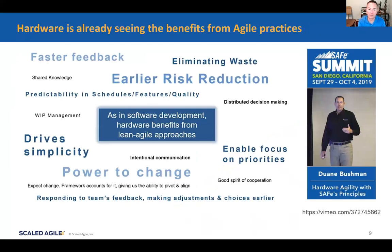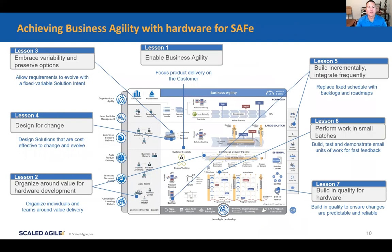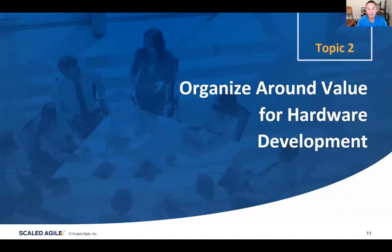Hardware is already seeing the benefits. There's a great video from our summit with one of our lead consultants in the hardware space — these are direct quotes from his customers: it reduces risk early, it eliminates waves, it's making our designs more simple, it's driving simplicity, we're getting faster feedback. So we just need to start adopting these practices. This tells us we want to be principle-based. The parts of SAFe for hardware apply: enable business agility, assume variability, embrace variability and preserve options, design systems for change, organize around value.